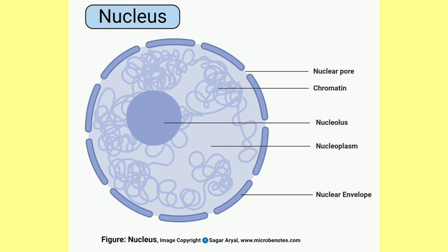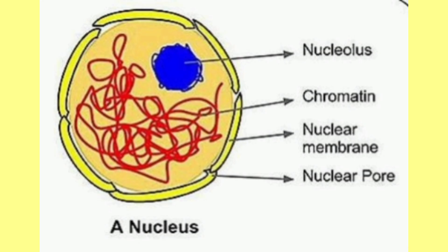The next one is the nucleus. The nucleus is generally spherical and located in the center of the cell. It is separated from the cytoplasm by a membrane called the nuclear membrane. The small spherical body within the nucleus is called the nucleolus. The nucleus contains thread-like structures called chromosomes, which carry genes and help transfer characters from parents to offspring.